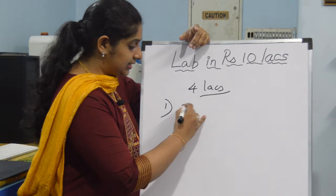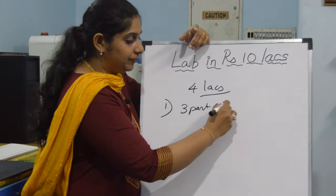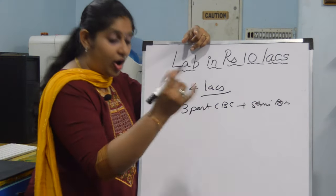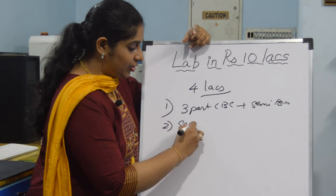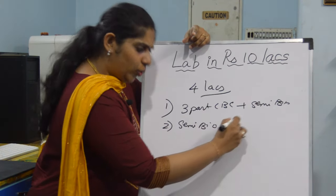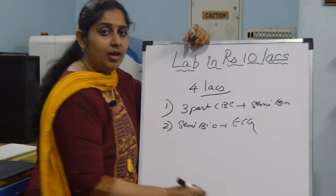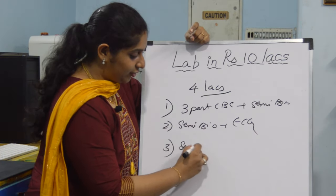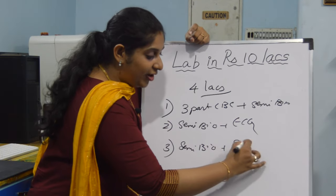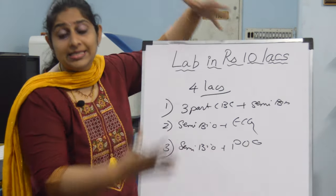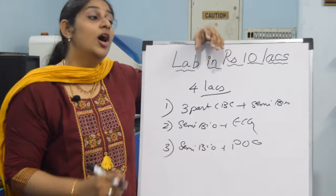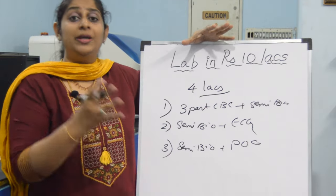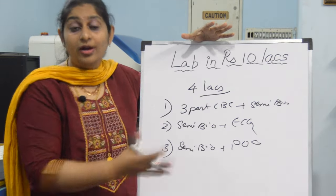The first one I would suggest is a three-part cell counter along with a semi-automated biochemistry or else you can go in for a semi-automated biochemistry with an ECG. Next thing is you can have a semi-automated biochemistry along with the point of care machines. These are just examples what I'm giving you, which you can accommodate in a 4 lakh budget in which you would be running most of the samples in your laboratory.